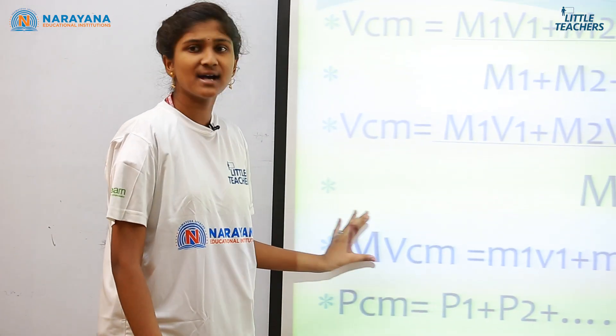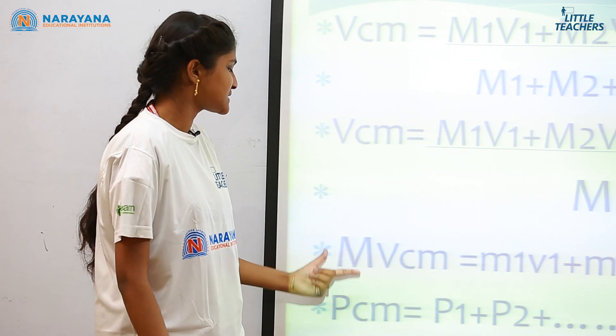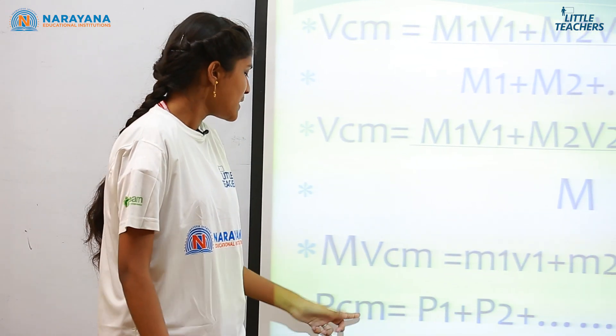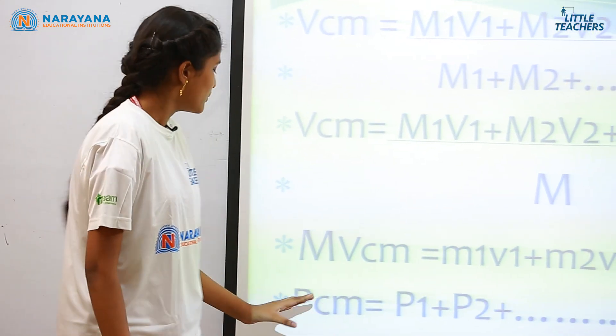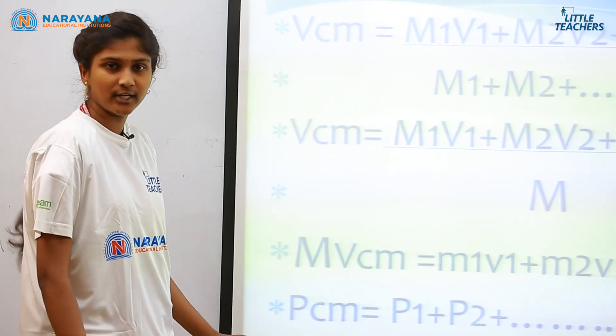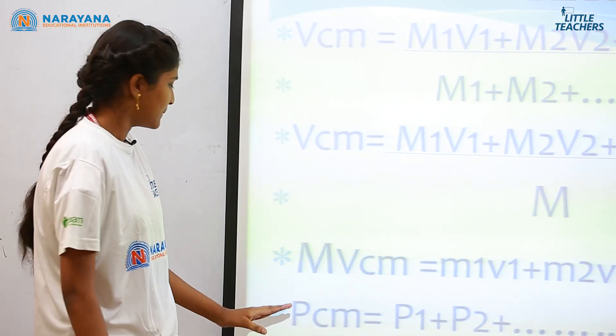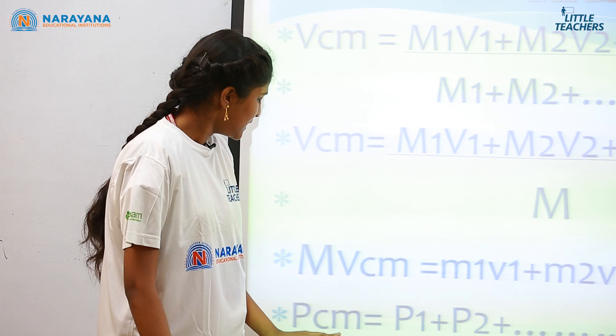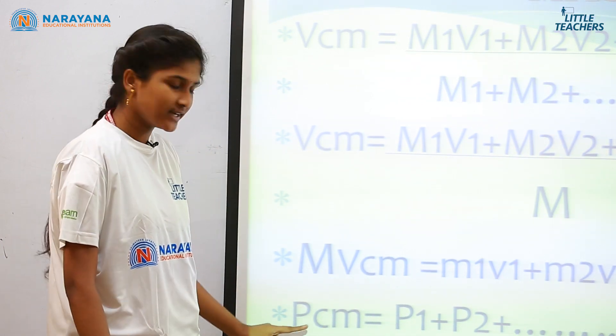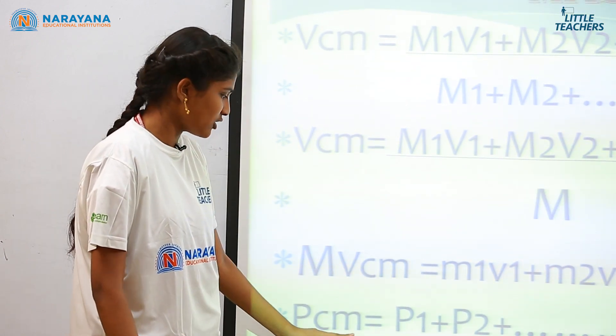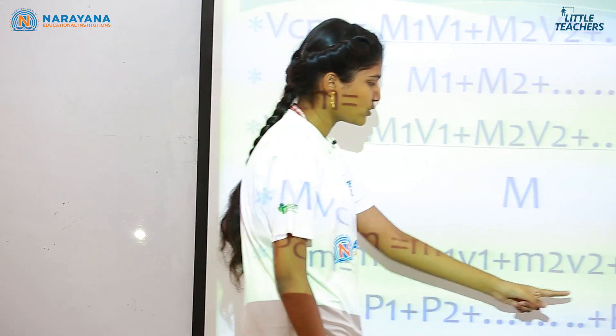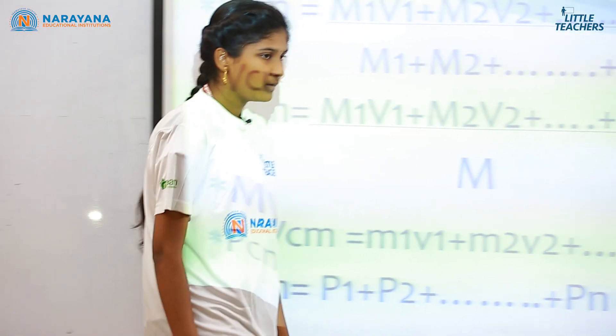Mass into velocity is considered as momentum, denoted by the letter p. So p_cm equals p1 plus p2 plus so on pn.